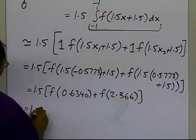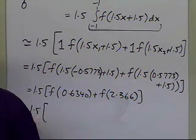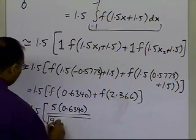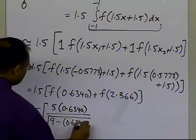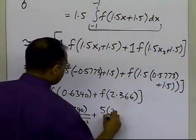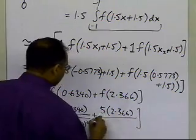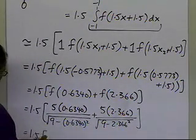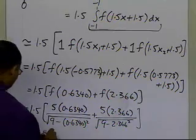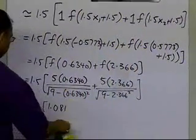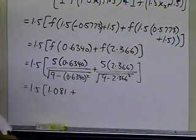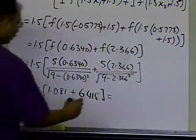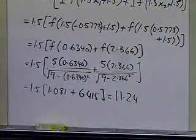We now calculate the value of the original function, 5x divided by the square root of 9 minus x squared, at those points. The value at x equal to 0.6340 turns out to be 1.081, and the value at x equal to 2.366 divided by the square root of 9 minus 2.366 squared turns out to be 6.415. Multiplying the sum by 1.5, we get approximately 11.24.